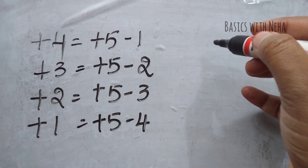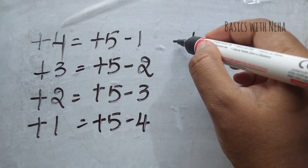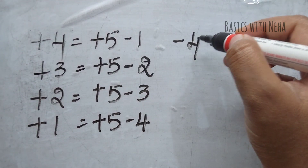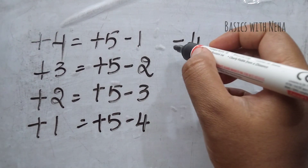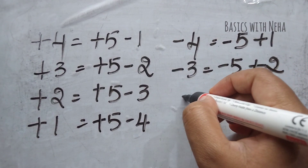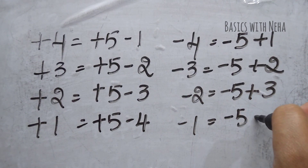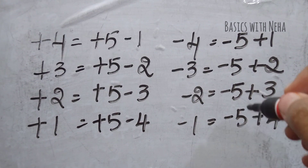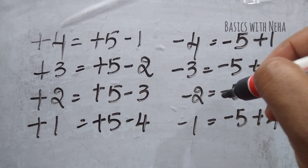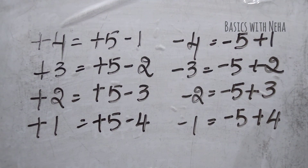For negative components — for minus 4: the number is minus, so the formula also starts with a minus sign. Minus 5, because we are talking about small friends. The friend of 4 is 1; since this is a negative number, the friend will be positive — plus 1. For minus 3: minus 5 plus 2. For minus 2: minus 5 plus 3. For minus 1: minus 5 plus 4. We use the small friends formula when the beads are indirectly available.